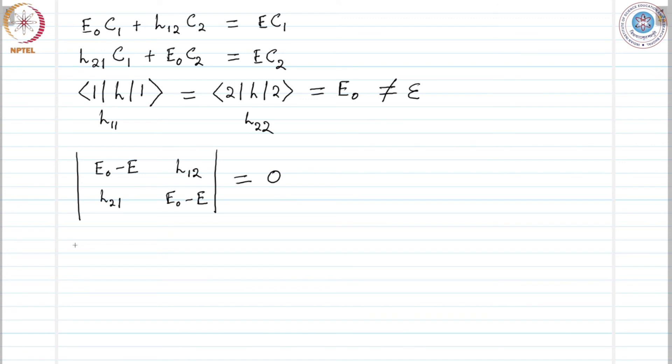That means we get a quadratic equation from this: E squared minus 2E naught E plus E naught squared minus H12 H21, this quantity equals zero.